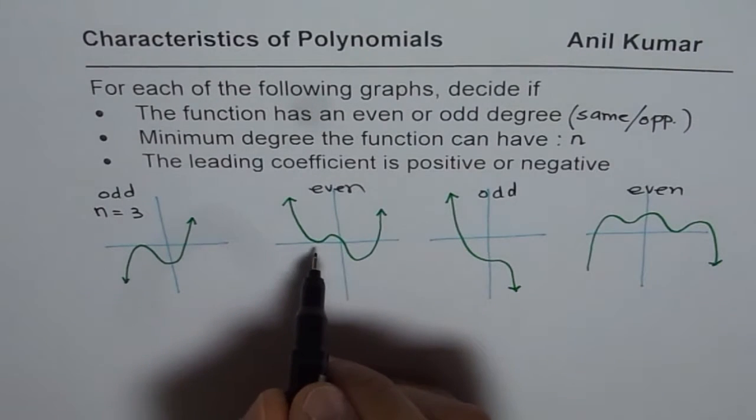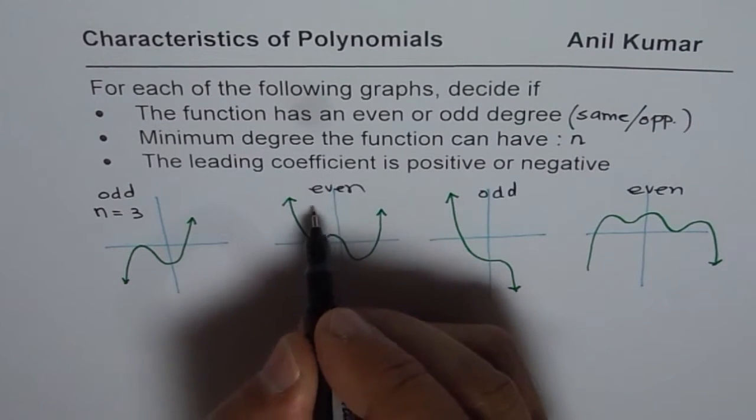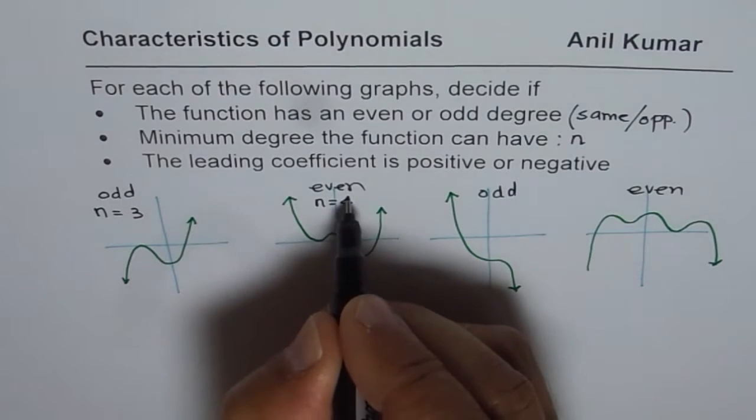In this particular case, we have 1 zero which is 2. This is 1, 3, and this is 1, 4. Even degree, it makes sense. So, minimum is n equals to 4.